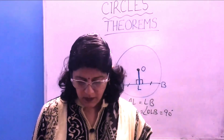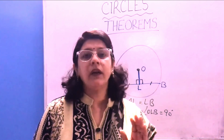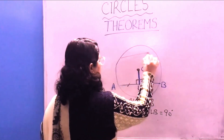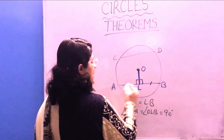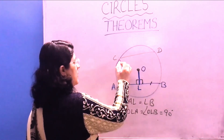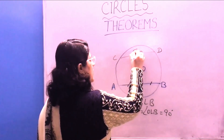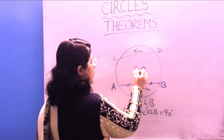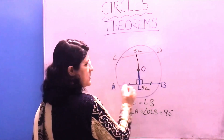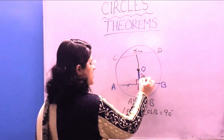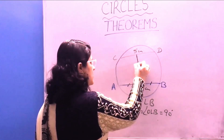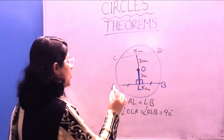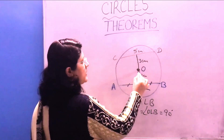The second theorem is: equal chords of a circle are equidistant from the center. Suppose AB is one chord and CD is another chord of the same length — say both are 5 cm. These are equal chords, so the distance of chord CD from the center is the same as that of chord AB. If this distance is 3 cm, then that distance is also 3 cm.